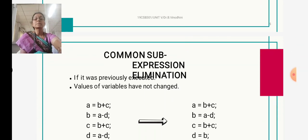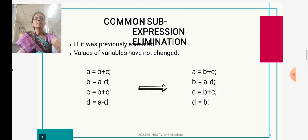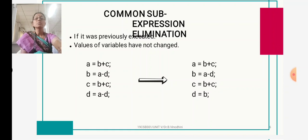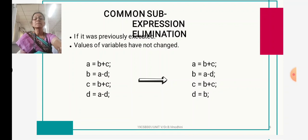First is common sub-expression elimination. Suppose we have a set of statements where 'a = b + c' and 'c = b + c' are common, and 'b = a - d' and 'd = a - d' are also common. Before eliminating the common sub-expression, we check if there is any previous evaluation of the given variable. We only eliminate from the last statement — instead of 'a - d', we put 'b'. But we are not eliminating 'b + c' because the evaluation of 'b' in the first and second statements is different.